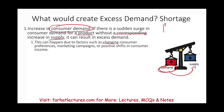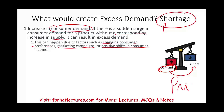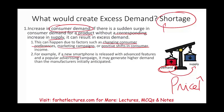This could also happen during changing consumer preferences, marketing campaigns, or a positive shift in consumer income where people have more money and create excess demand. For example, if a new smartphone is released with advanced features and a popular advertising campaign — we're talking about Apple here — it might generate higher demand than the manufacturer initially anticipated. This happens to Apple every time they release a new phone — there's always excess demand, a shortage. You put your order and have to wait a month or two to get your phone.